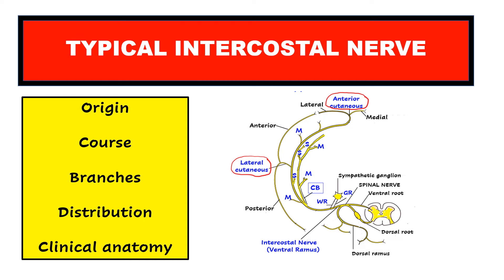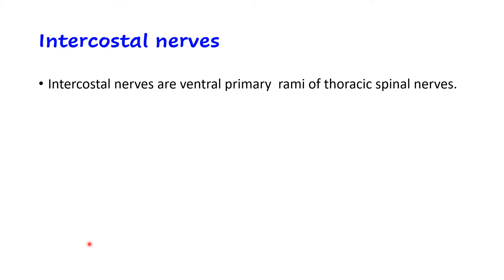This video is on the typical intercostal nerve. We will discuss the origin of the typical intercostal nerve, its course, branches, distribution (the structures supplied), and finally the relevant clinical anatomy. I have described intercostal nerves - how many there are, what exactly they are, and which are atypical and typical - in the previous video. I will put the link to that video in the description box.